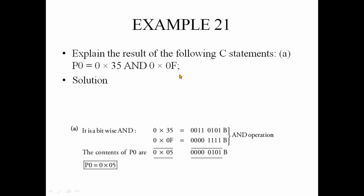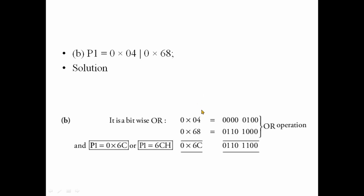For example, explain the result of the following C statement: P0 is equal to 0x35 AND 0x0F. 0x35 represents the X value and 0x0F is the AND mask. If you have 1 AND 1, you get 1 — bitwise. It says 1,1,1,0,1,0 bitwise AND gives 0x05.